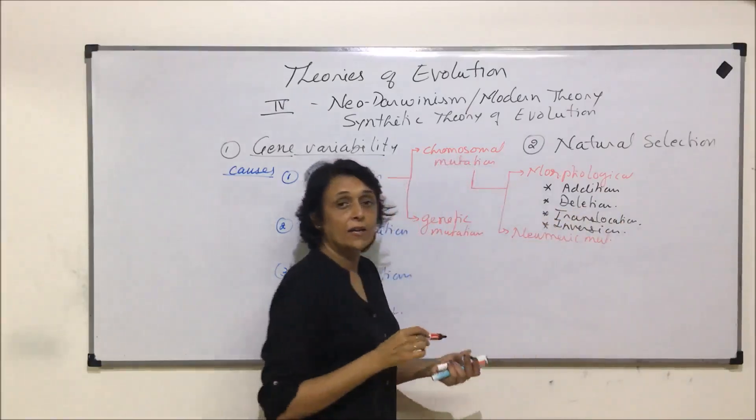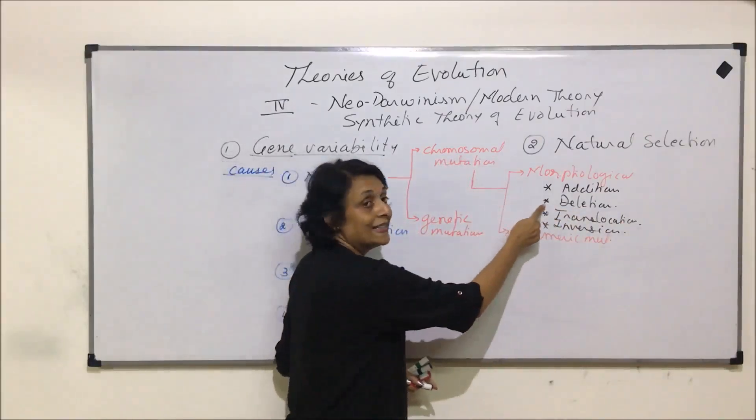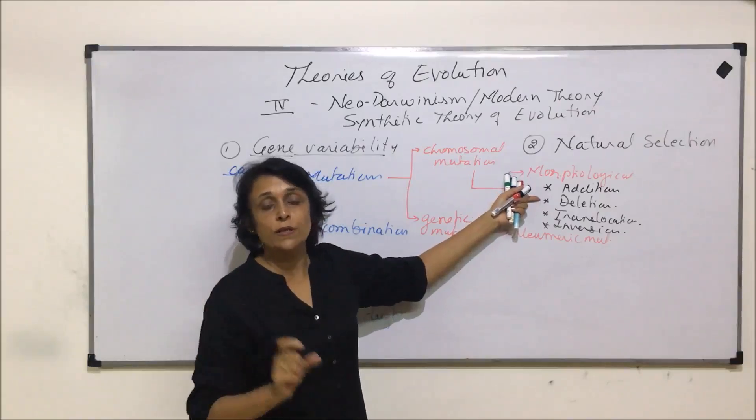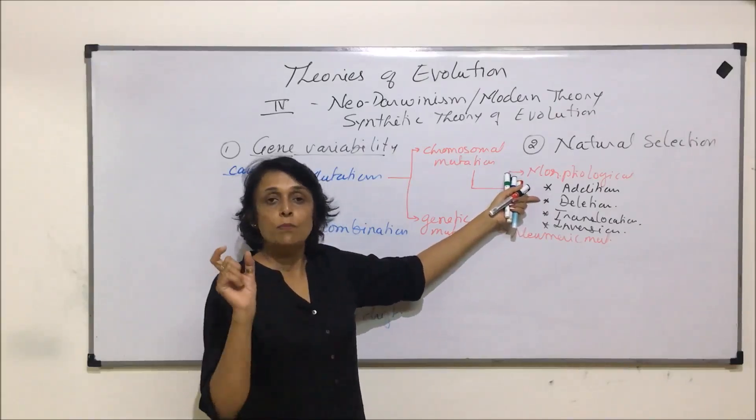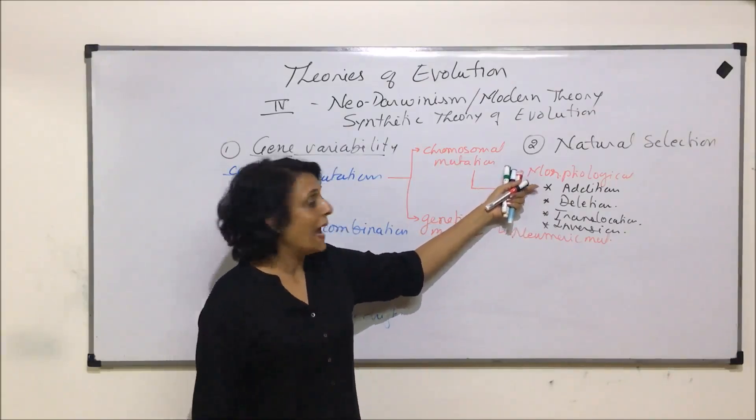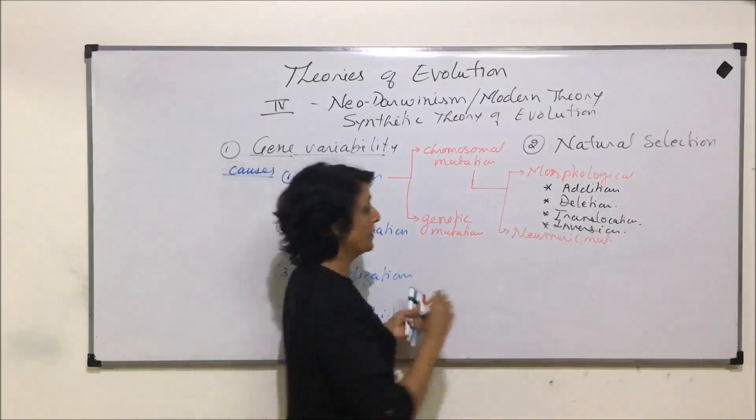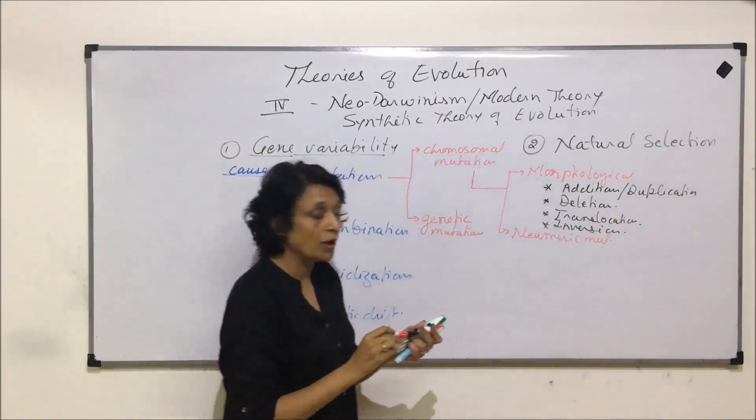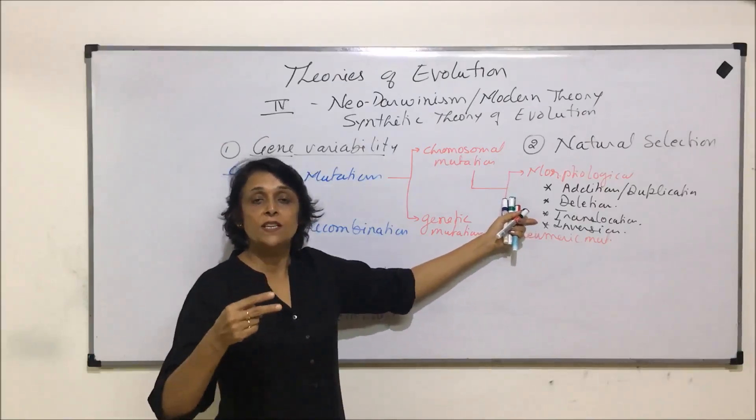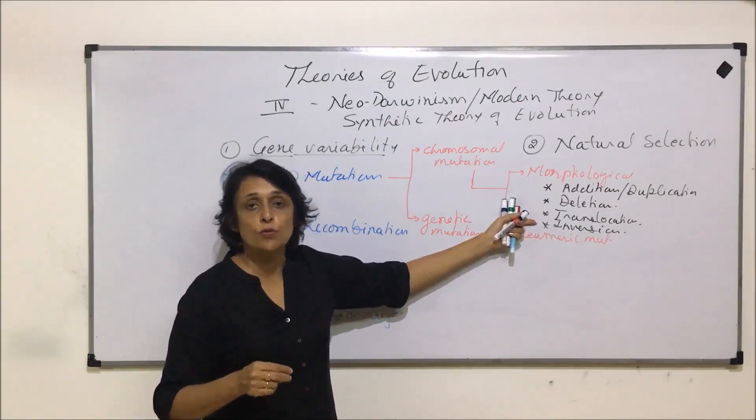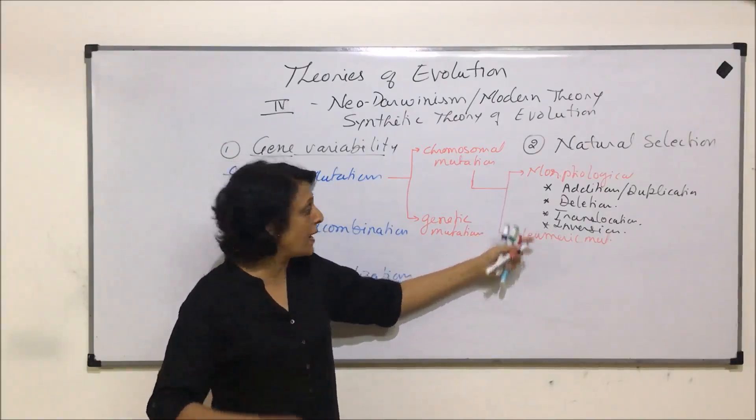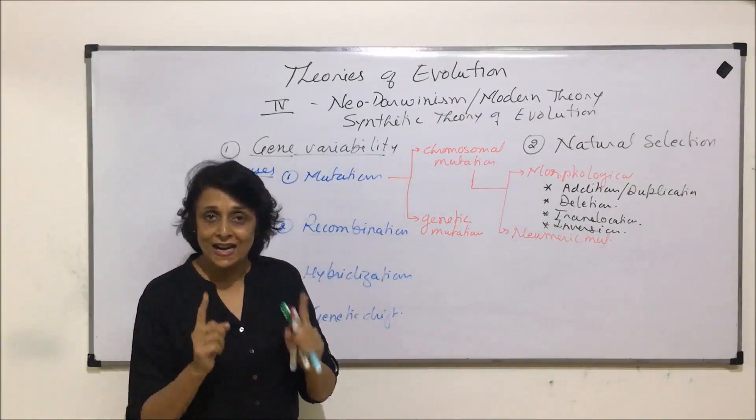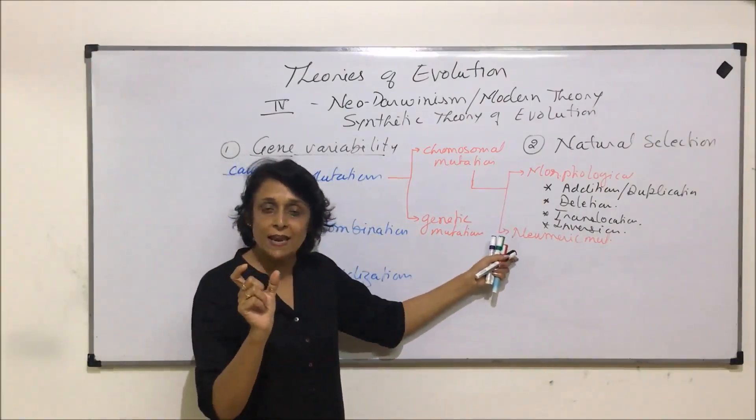That means a part of the chromosome gets deleted from one place and gets added in some other part. So a piece gets broken. If it is broken, then we will consider it as deletion. If that broken part gets added somewhere, then it will be called addition. It can also be a duplication. And translocation would be when two pieces get broken down from the homologous chromosomes and they change their position amongst that pair of chromosomes. Inversion is where a piece gets cut, rotates 180 degrees, and then joins that same chromosome. But the sequence would be read in an inverted manner.